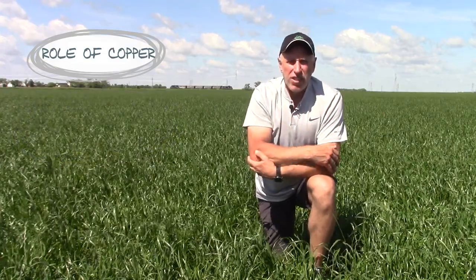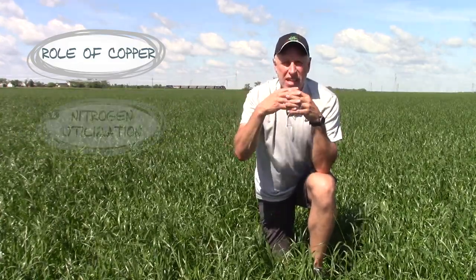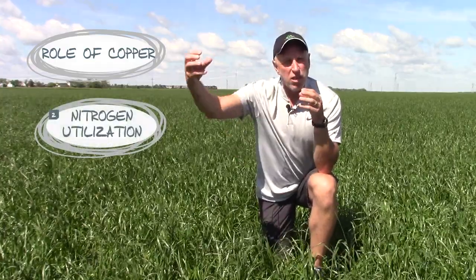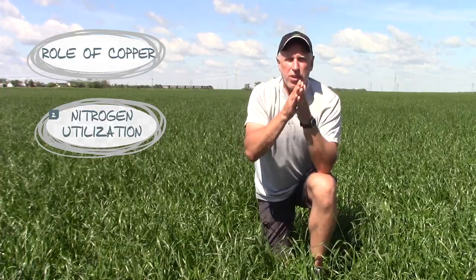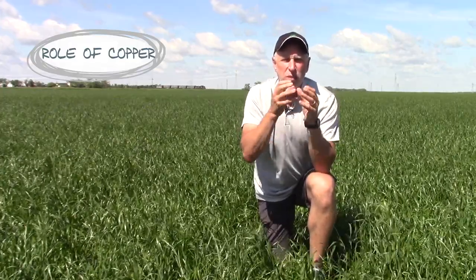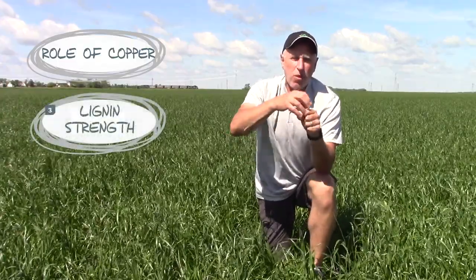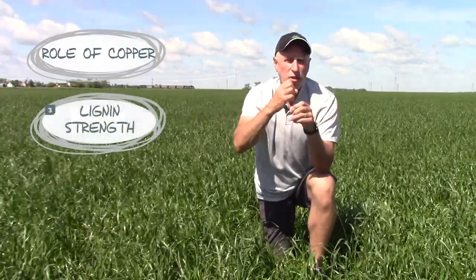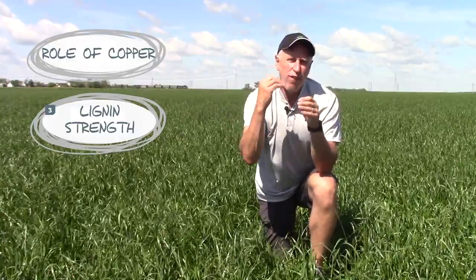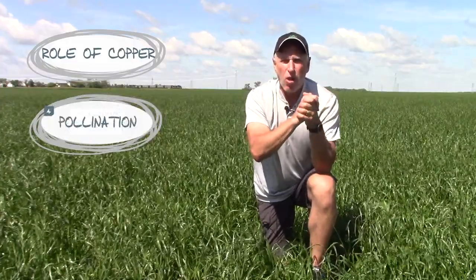The other key thing that copper plays in the plant is its correlation and interaction with nitrogen management, nitrogen utilization, and ultimately protein production in the wheat plant. The third thing copper does in the plant is in regard to lignin strength, which refers to the strength we have in the stalk or the leaf. And this lignin strength is tied to the fourth key thing copper does, which is the importance of proper pollination.